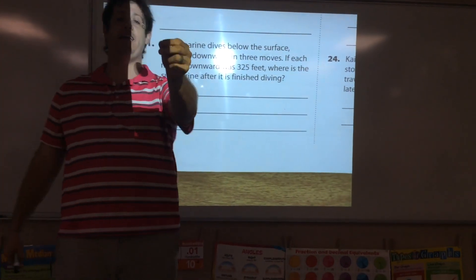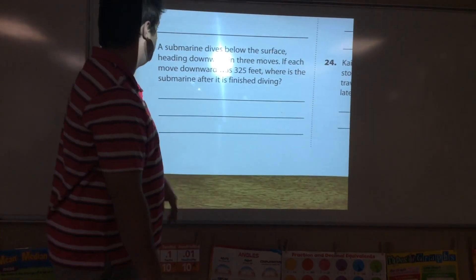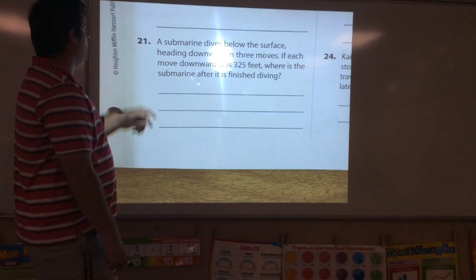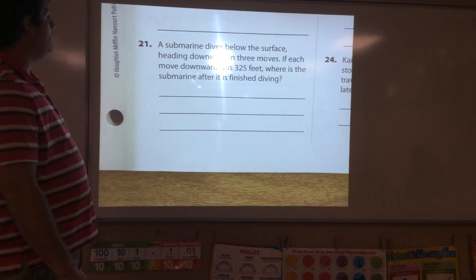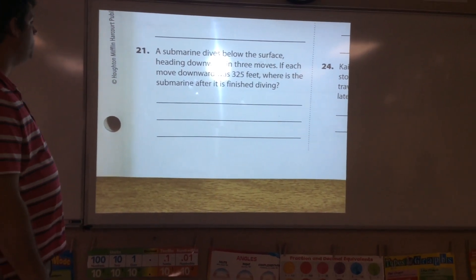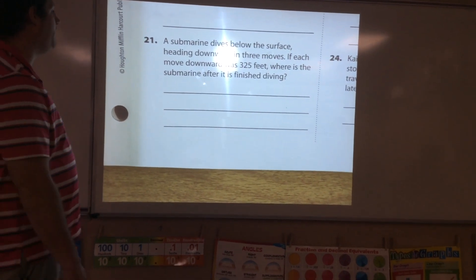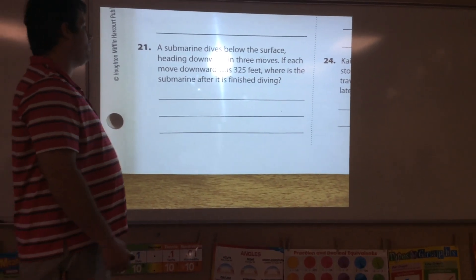I told you in class to write down what I write down. Very simple. A submarine dives below the surface heading downward in three moves. If each move downward has 325 feet, where is the submarine after it is finished diving?